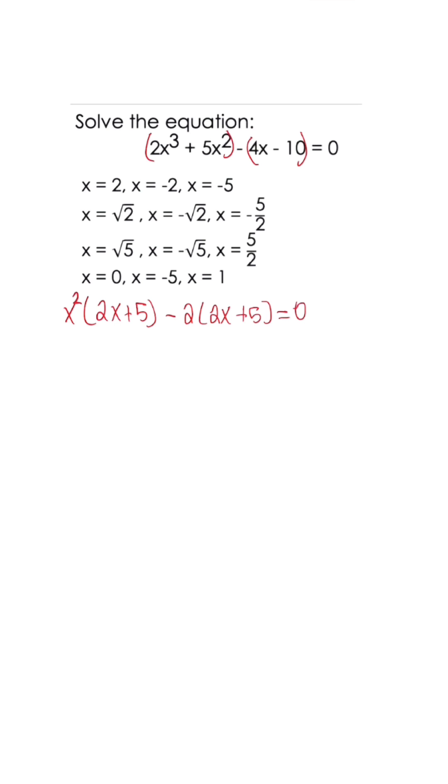Set the equation equal to 0. So we know our first factor is 2x plus 5 equals 0. Once we simplify, we'll get 2x equals negative 5, x equals negative 5 over 2.